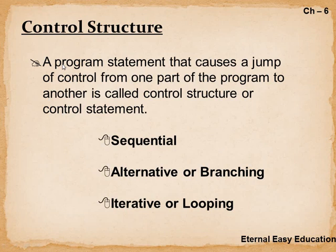A program statement that causes a jump of control from one part of the program to another is called a control structure or control statement, because it is controlling the flow of program statements. There are three types: sequential, alternative or branching, and iterative or looping.